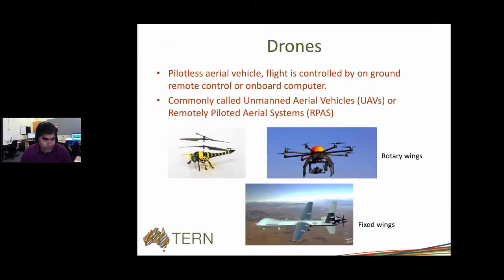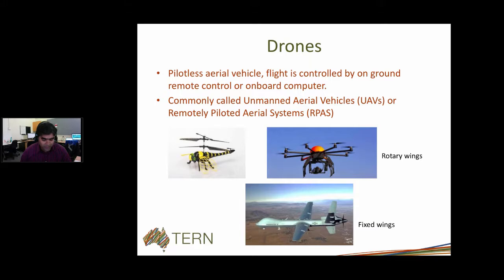Just a quick introduction: when we say drone, what is a drone? It's nothing but an aerial vehicle, which may be controlled by an on-ground remote control or an onboard computer. Drone has got different names, commonly used as UAVs or RPAS. I like RPAS partly because it's a gender-neutral name rather than 'unmanned.' Predominantly, if it's rotary wings, it's called a drone, and even the big fixed-wing aerial vehicles are also in this category. Some are pretty big — as big as an aircraft — and they overload the sky and gather data.